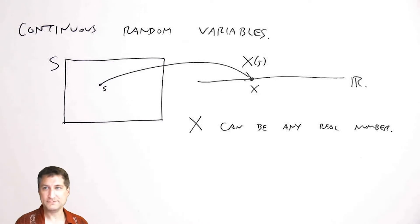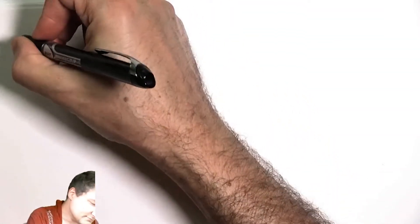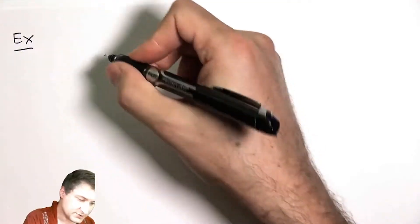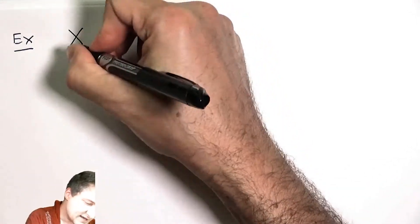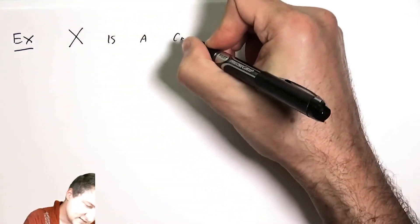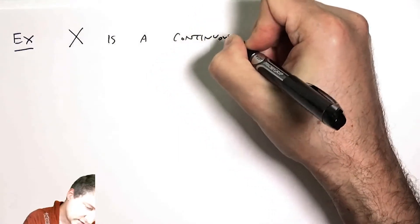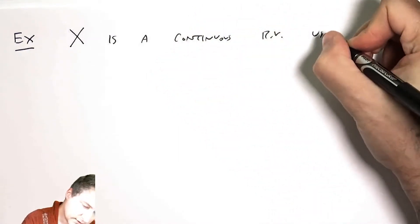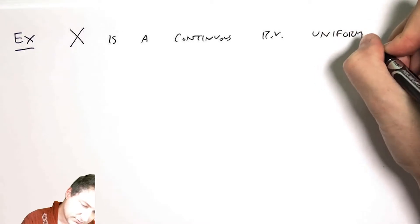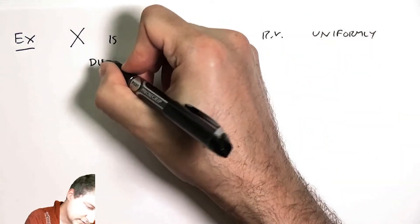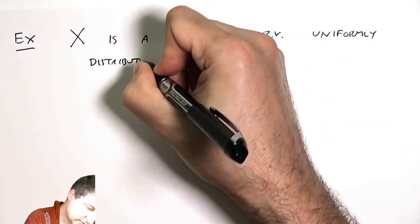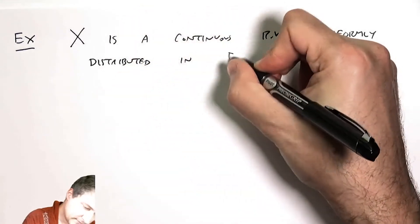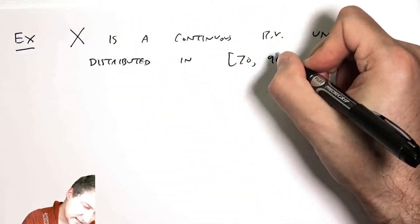Okay, so for example, let's suppose I'm talking about how long does my class last. Normally I teach in blocks that are 80 minutes long, but sometimes I'm a little bit long and sometimes a little bit short. So let's suppose that x is a continuous random variable uniformly distributed in 70 minutes to 90 minutes.